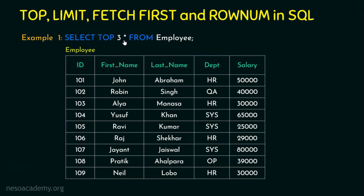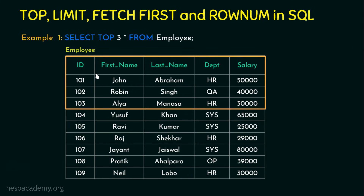Here is the employee table. I want to retrieve all columns, but the query is SELECT TOP 3 FROM employee. With TOP 3, I need no specific condition — simply giving TOP 3 means the output will be the first three rows: rows 1, 2, and 3. The output of this SQL statement is going to be those first three rows.